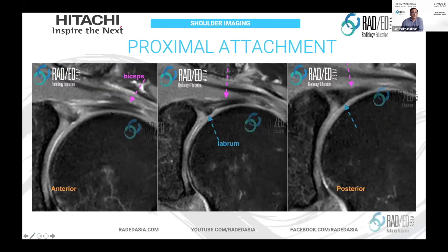So on these coronal scans going from anterior to posterior, the labrum is indicated here — superior labrum — and here's the biceps tendon. Because the biceps tendon curves, you need to follow it on a couple of slices; you're not going to get it in one single slice, you have to follow it on about three slices or so. Here anteriorly we're in the biceps tendon, it hasn't inserted yet. Now we're getting to the insertion into the labrum, and here's the posterior portion where it's at the back end of the insertion site. We have an insertion both into the labrum and into the supraglenoid region.